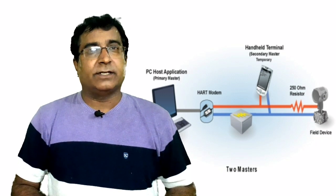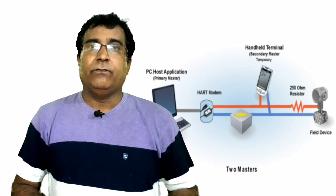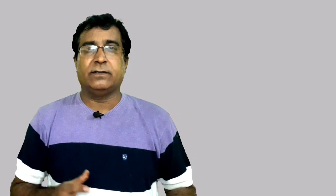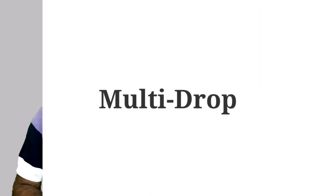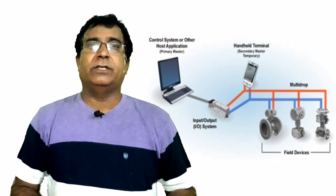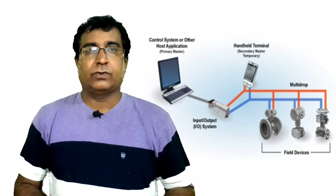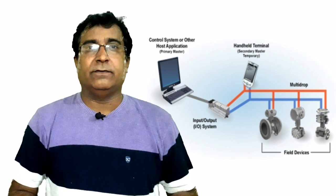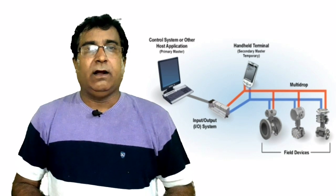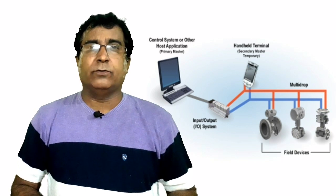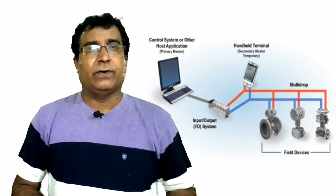This allows secondary masters such as a handheld communicator to be used without interfering with communication to and from the primary master, i.e., the control monitoring system. Now the second method is multi-drop connection. In multi-drop mode, the analog loop is kept fixed at 4 mA all the time, and all the transmitters are placed on a single cable connected with a host through a HART interface card which will be communicating with PLC and DCS. HART revision 3 allows polling addresses of the instrument in the range of 1 to 15, and HART revision 6 and 7 allow addresses from 1 to 63. Address 0 is allotted to the HHC or host.